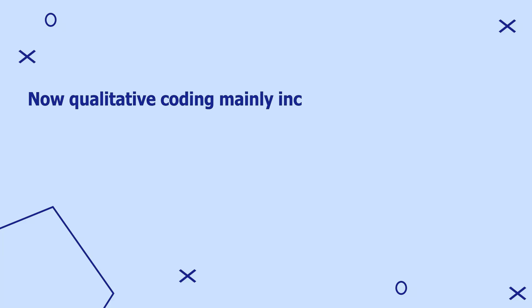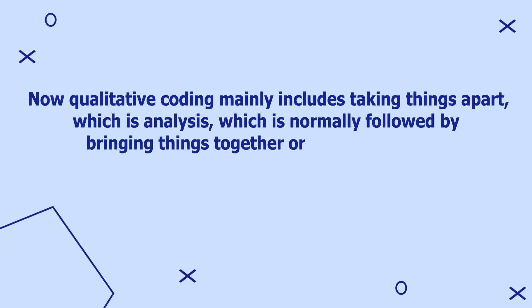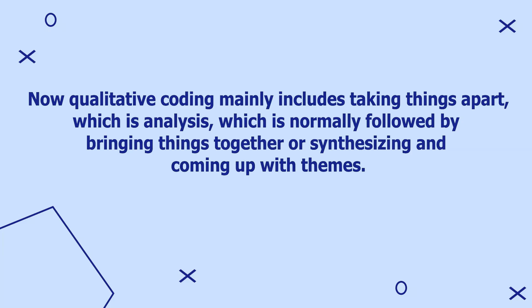When conducting a qualitative study, you most likely need to do a form of qualitative coding. Qualitative coding is a step in thematic analysis, meaning we first come up with codes and then we look for a pattern of shared meaning between the codes to develop them. Qualitative coding mainly includes taking things apart, which is analysis, which is normally followed by bringing things together or synthesizing and coming up with themes.